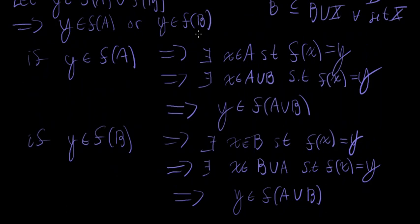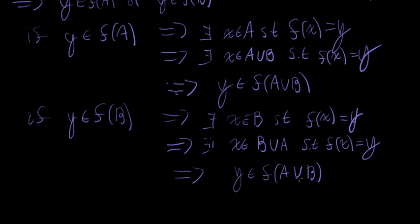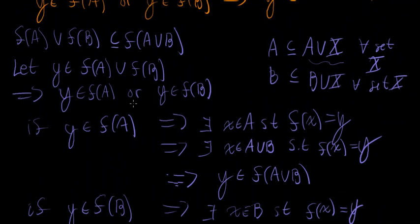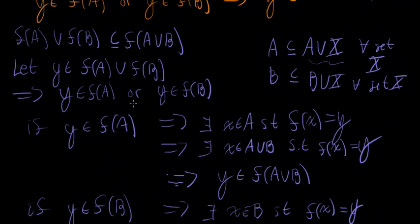We've shown it. In both cases, whether y is in f of a or y is in f of b, then y must be in f of a union b. Therefore, for any y in f of a union f of b, y must be in f of a union b. We've shown the other direction: f of a union f of b is a subset of f of a union b. With both sides of the proof complete, we've shown the equality.